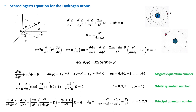The solution for the third (radial) equation requires that the energy E be positive or have one of certain negative values. The negative sign shows that the electron is bound to the atom. This formula is the same formula obtained by Bohr's hydrogen model. Another condition is that the principal quantum number n must be equal to or greater than l plus 1, meaning the maximum value of l is n minus 1.